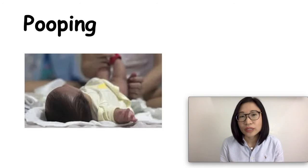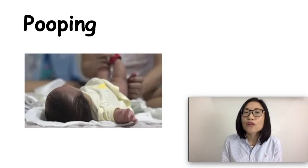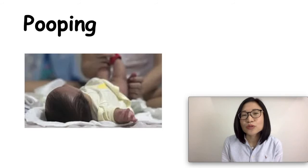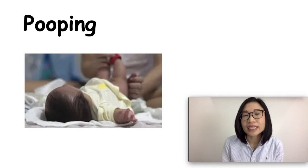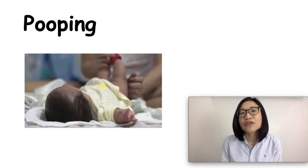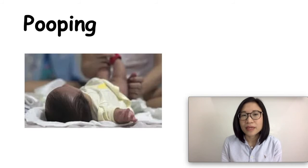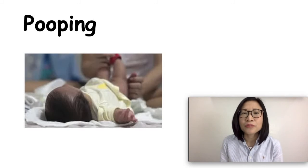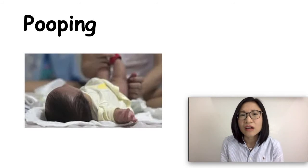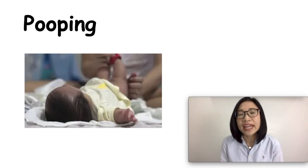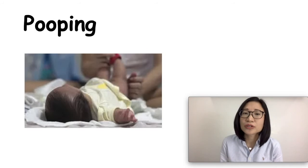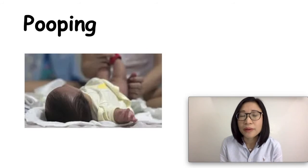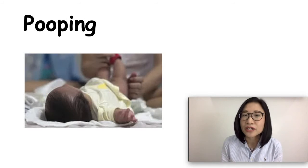For bottle-fed babies, they usually have a bowel movement about once a day. If you note that your bottle-fed baby is having less frequent pooping and your baby is straining a lot or crying and have hard poop, then go to your pediatrician and let your pediatrician know about it because your baby might be constipated.